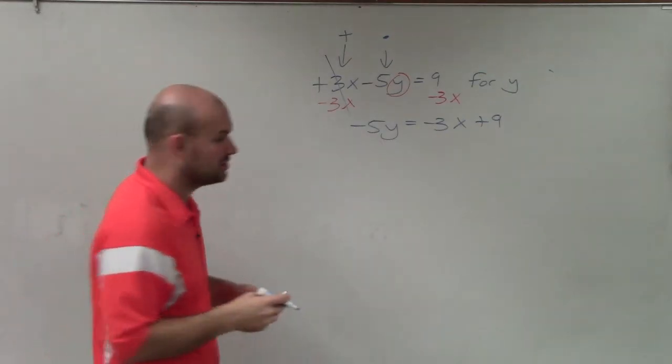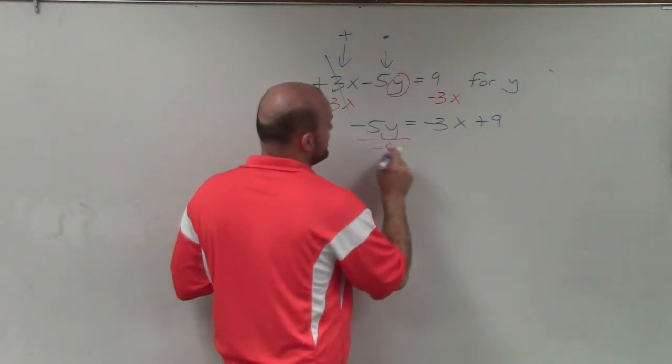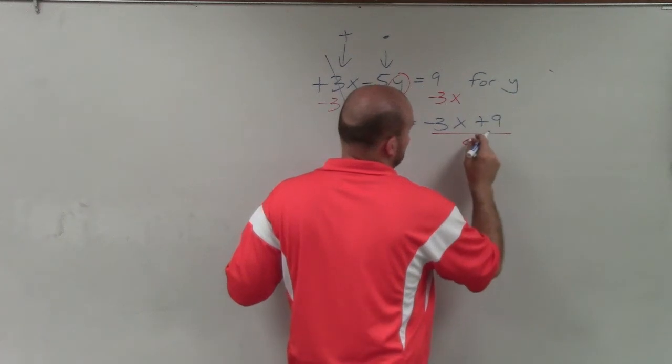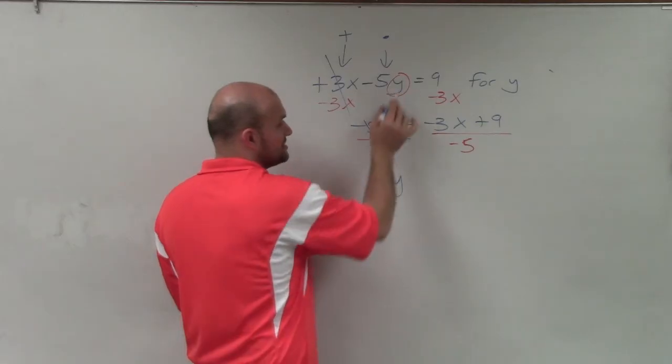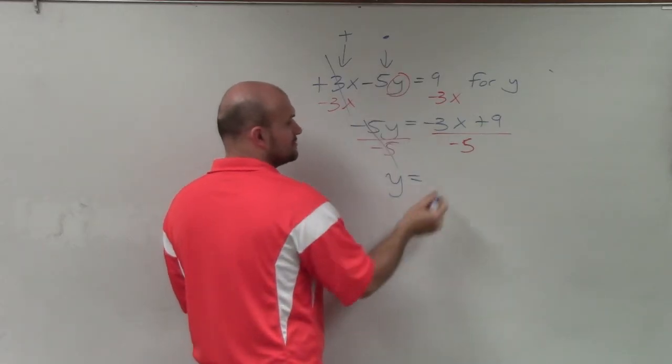Now I need to undo multiplication by negative 5. So I'll divide by negative 5. Now that divides to 1, and I'm left with y, which is now isolated, is equal to...